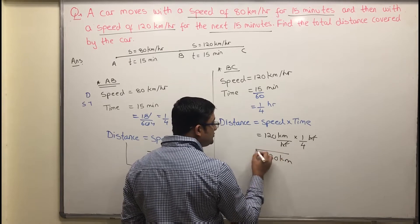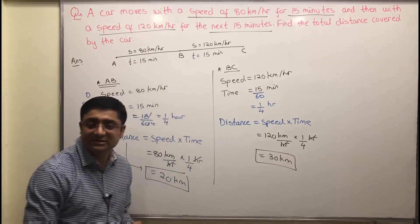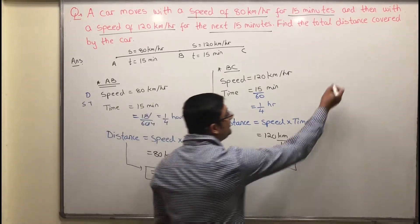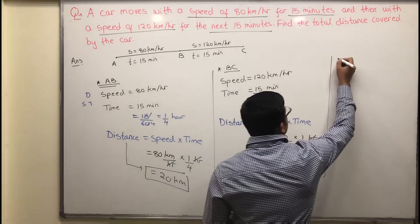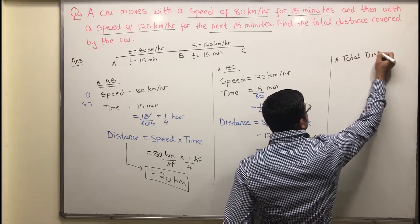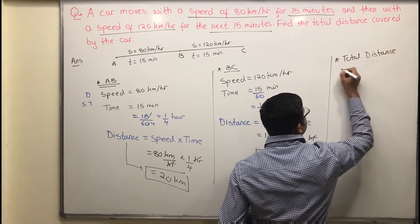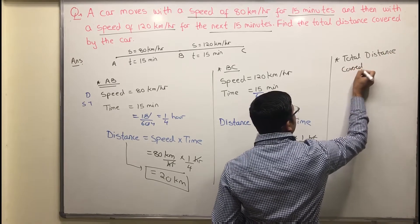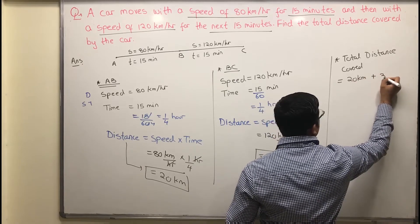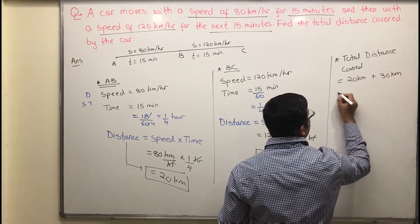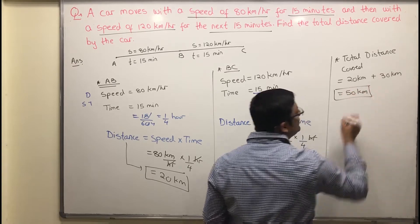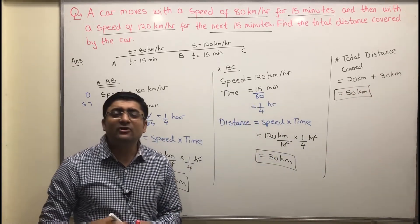The hours cancel out, and 120 divided by 4 is 30 kilometers. So the distance traveled from B to C is 30 kilometers. The total distance traveled is 20 plus 30, which is 50 kilometers. Therefore, total distance covered equals 20 kilometers plus 30 kilometers, giving a final answer of 50 kilometers.